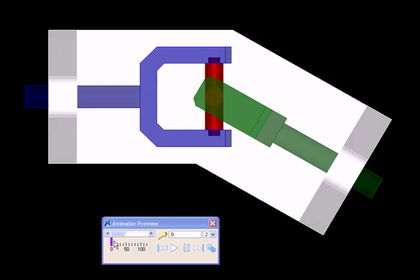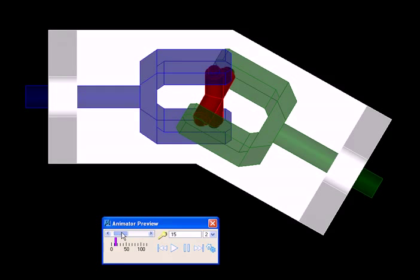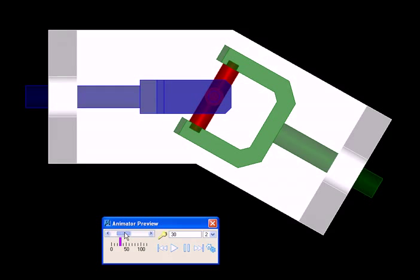So here we are looking at the 3D model from the top view. Let us give it a quarter of a revolution. Now you can see this shaft has turned through 90 degrees, and so has the other one.